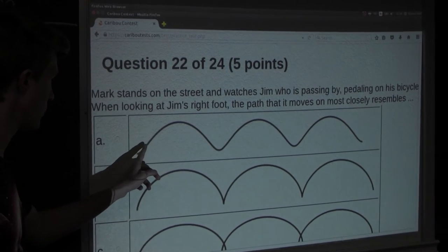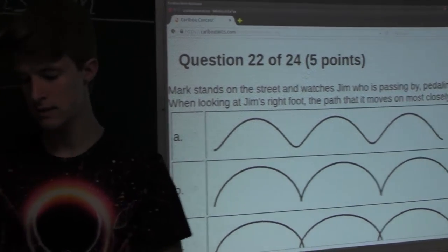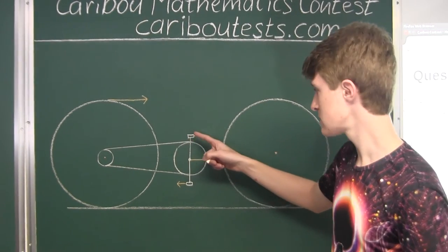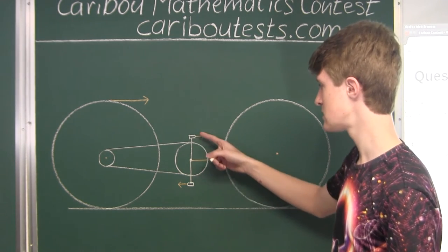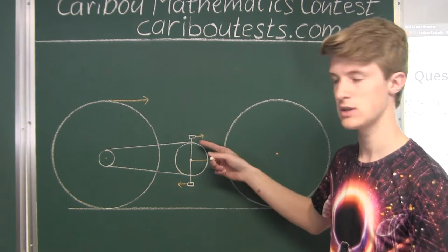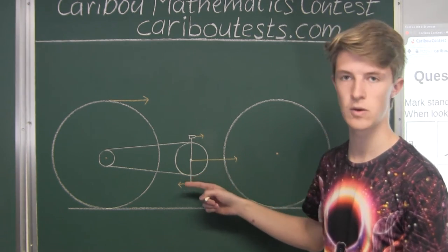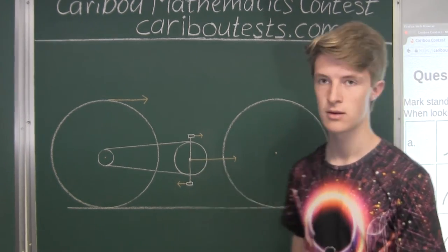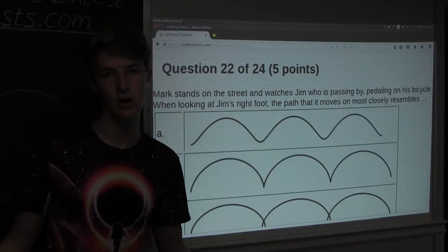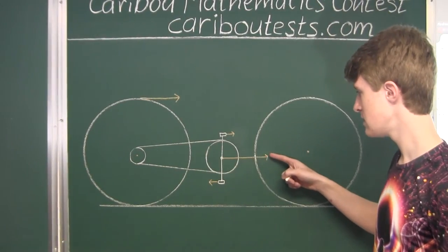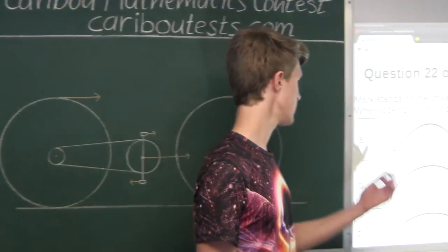Option A shows that when the bike pedal is at the top, it moves faster than when the bike pedal is at the bottom. This makes sense because when the bike pedal is at the top, its vector is in the same direction as the vector for the velocity of the bike frame in relation to the street, so that sum will be greater. When the pedal is at the bottom they are going in opposite directions, giving the difference of the two vectors — that explains why the path is so narrow. It also doesn't stop at the bottom because the bike frame's velocity is larger than the pedal's velocity. So option A is valid.